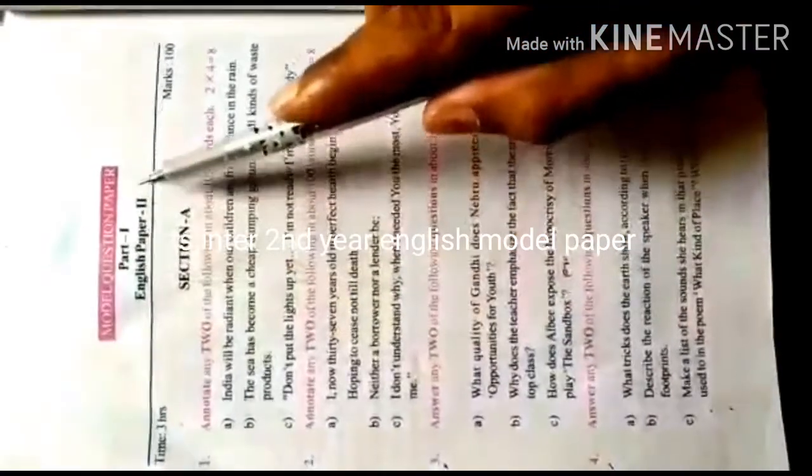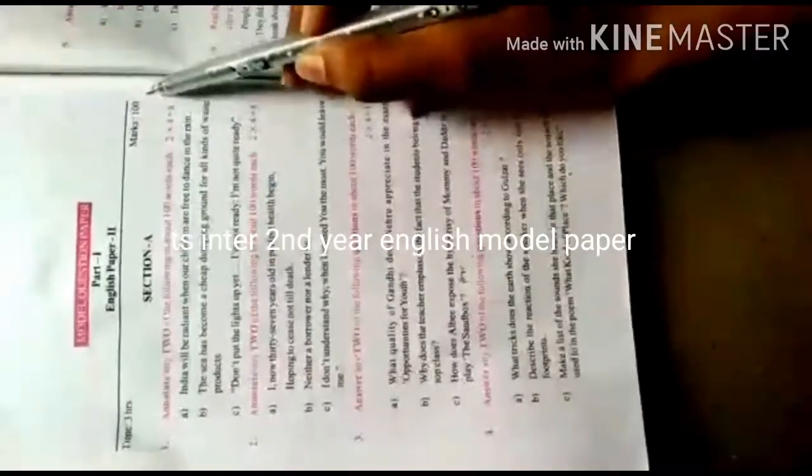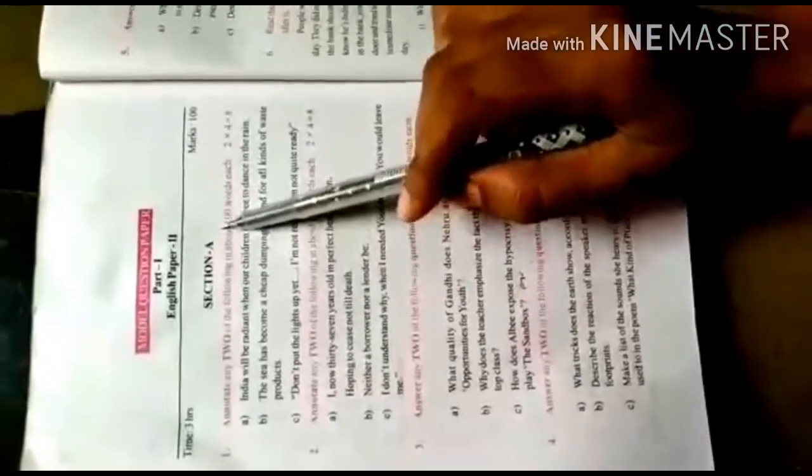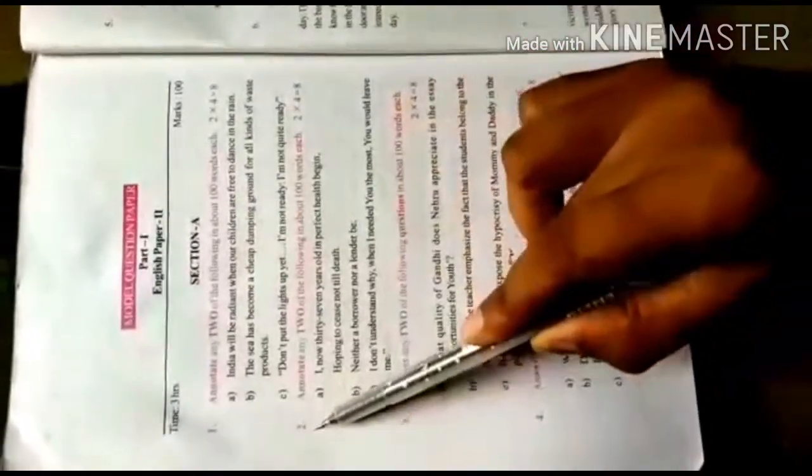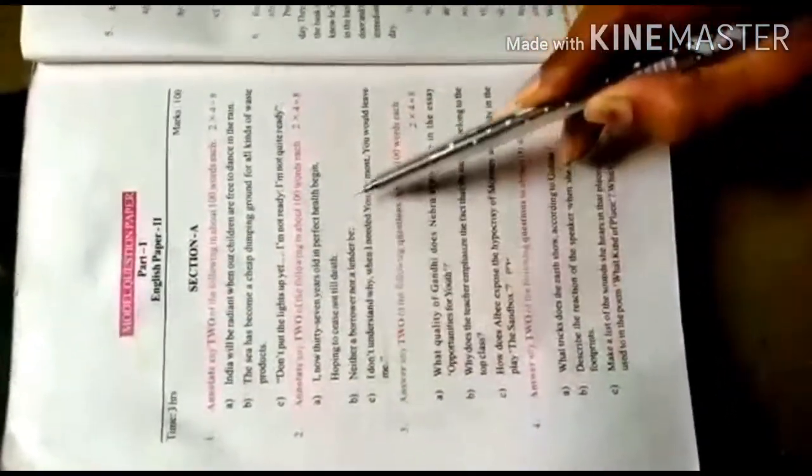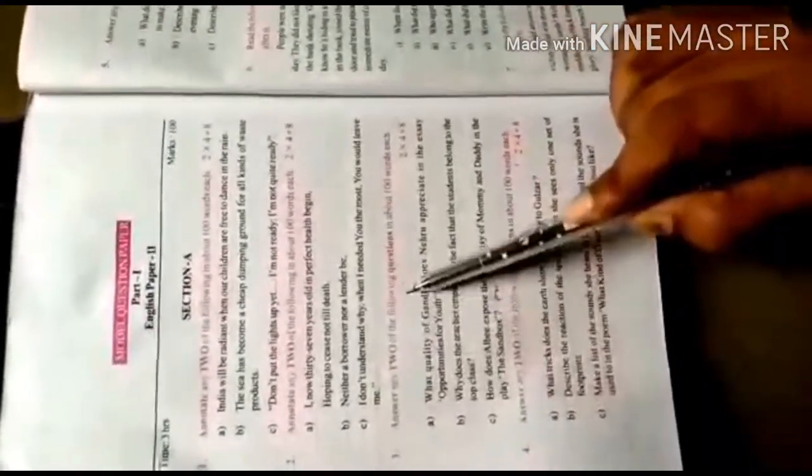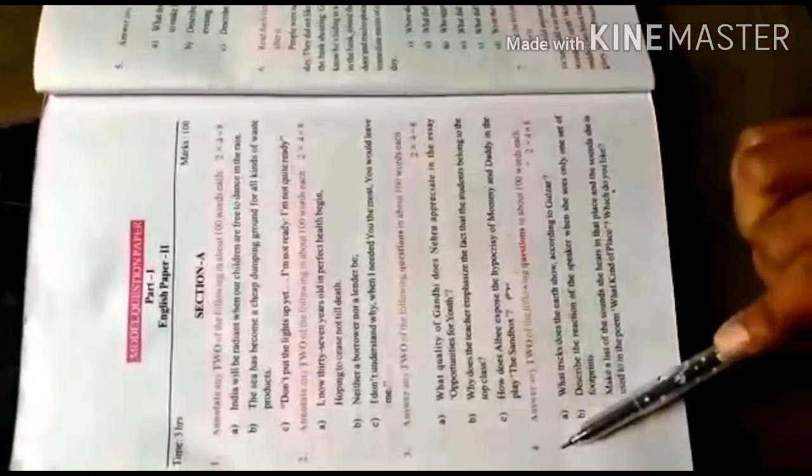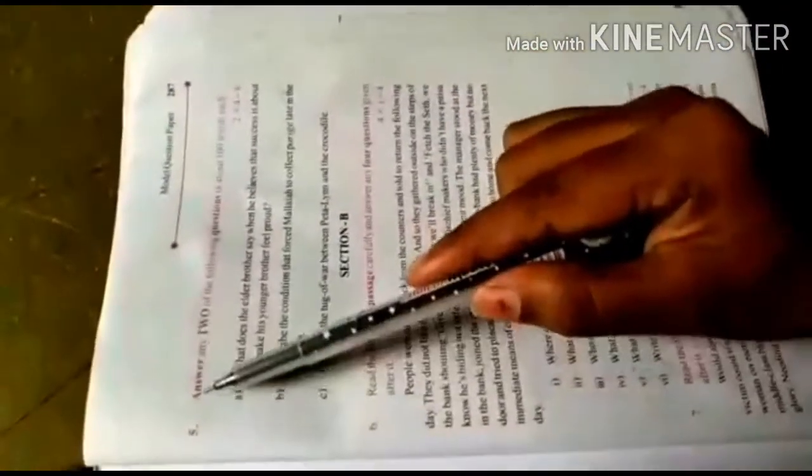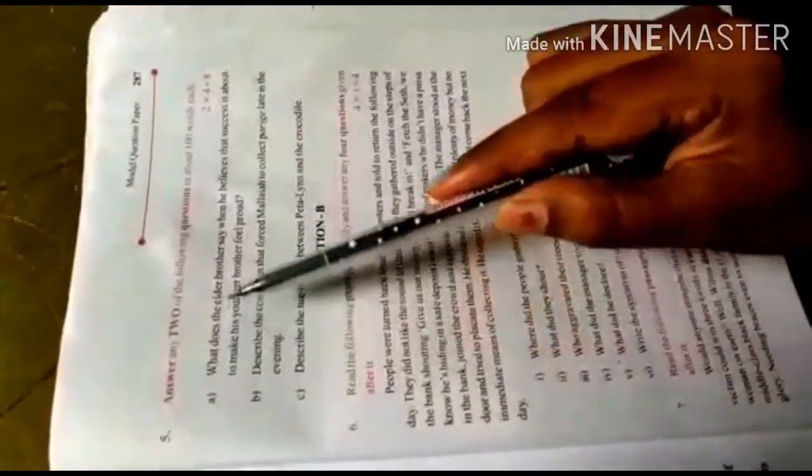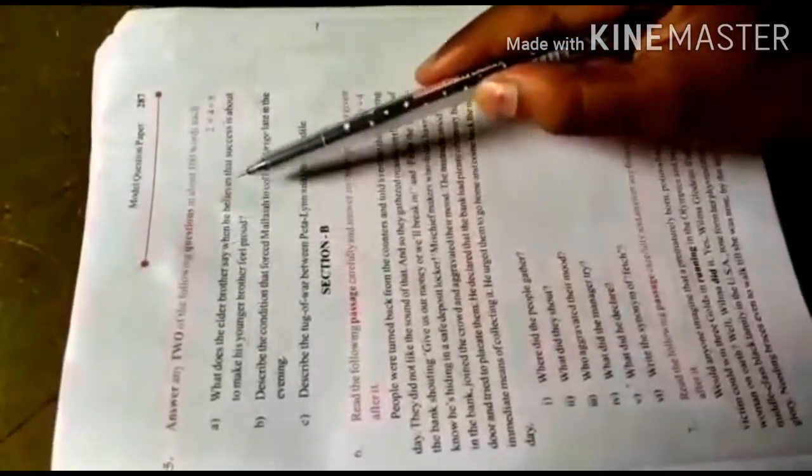T.A.S. Inter-Second-Year English Model Paper, 100 marks. Section A includes: first bit - annotations from prose; second bit - annotations from poetry; third bit - question answers from prose; fourth bit - question answers from poetry; fifth bit - question answers from short stories.